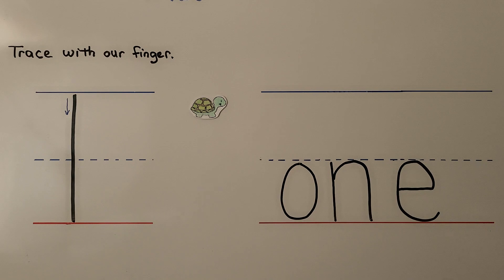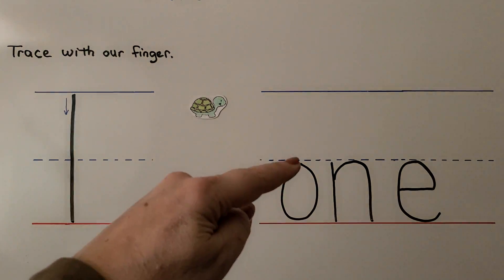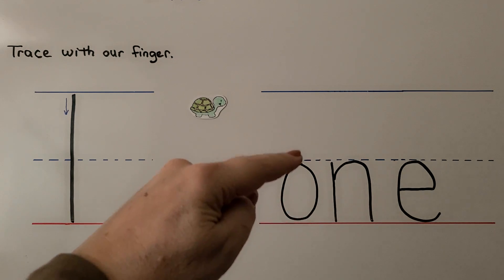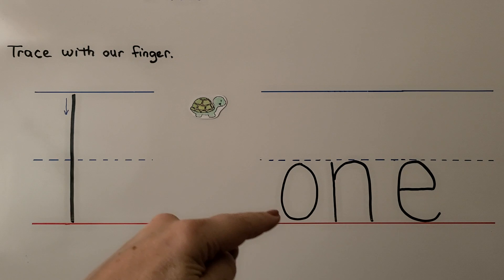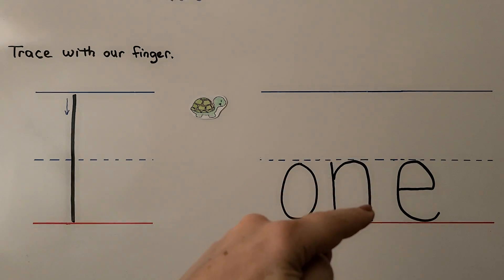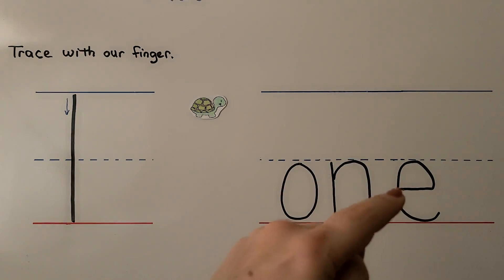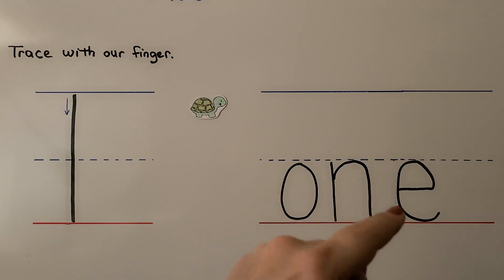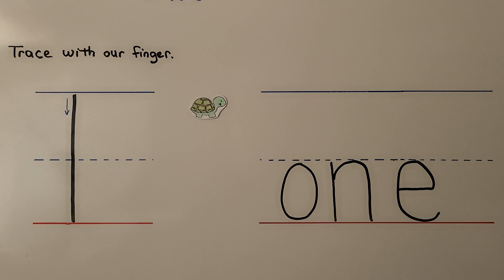For left-handed students: for the O, we start at the top and come around this way and back up again. For the N, we come down and bounce around to the line — same as right-handed. For the E, we start in the middle, head to the side and come up and around. That's the number one — O-N-E.